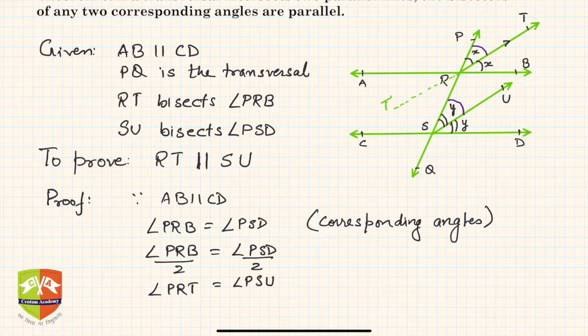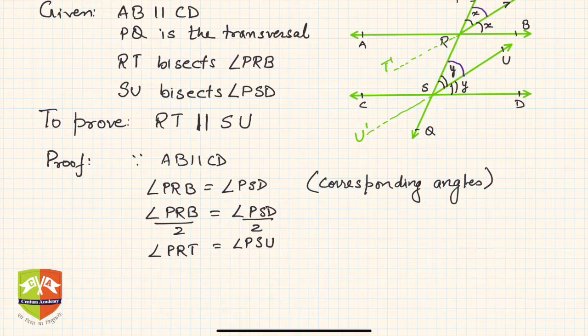RT could be produced backwards - let's say this is RT dash, and SU you can produce backwards like that. So these are the two lines, U dash U and T dash T. Clearly PQ is the transversal where PRT equals PSU.